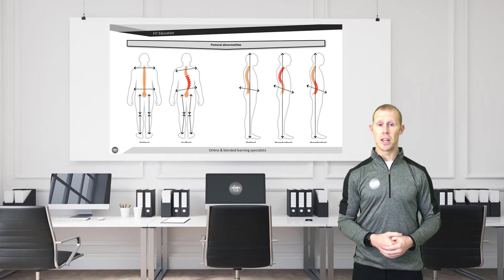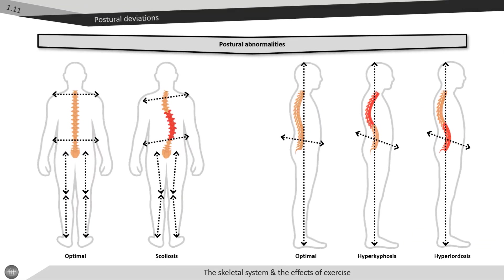A person's posture can deviate from an optimal spinal alignment for a number of reasons, such as sustained postures when gaming or desk working, habitual exercise or sports imbalances, age-related conditions such as osteoporosis, injuries, and congenital or genetic conditions such as cerebral palsy. Postural abnormalities increase both the stress on the spine and surrounding soft tissue structures while decreasing the efficiency of movement.